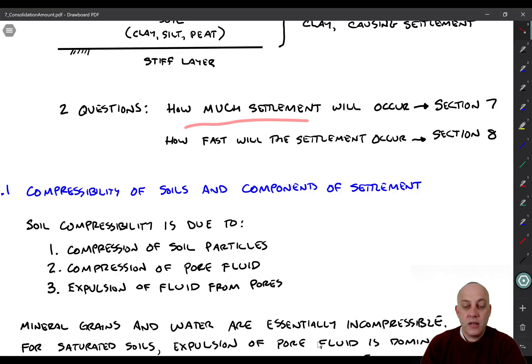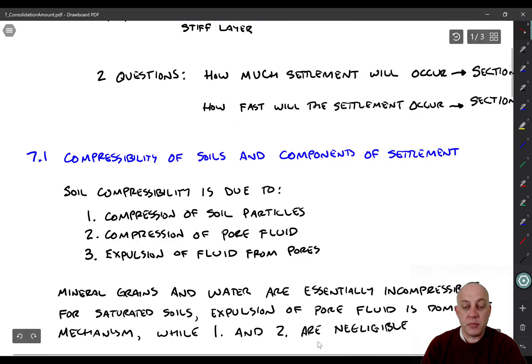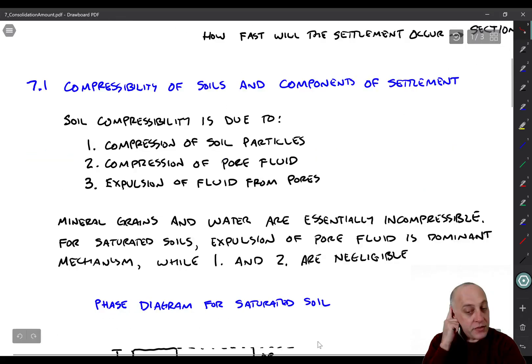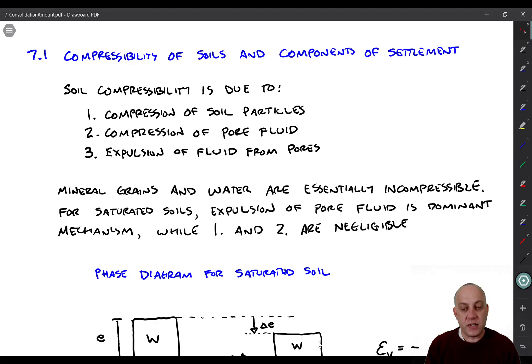Alright, so let's talk about compressibility of soils and the components of settlement that contribute to surface settlement that can cause damage to structures. It turns out one of the key calculations that a geotechnical engineer will do is how much is a soil going to settle in response to some loading condition, and then is that settlement tolerable for the structure, whatever's built on top of it. So soil compressibility is really due to three different components, two of which we completely ignore, so there's really only one that we're worried about here.